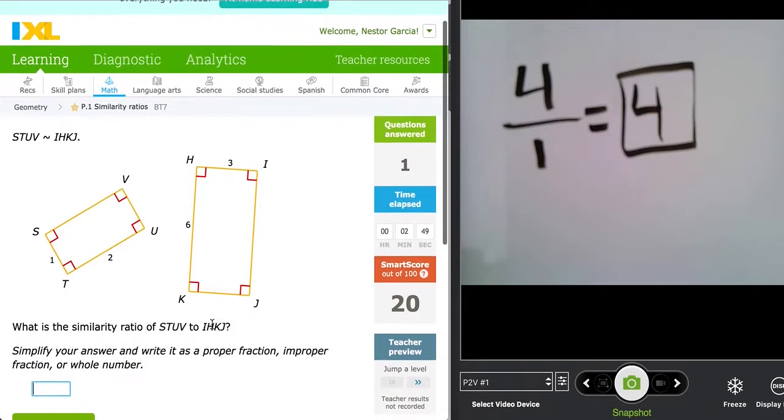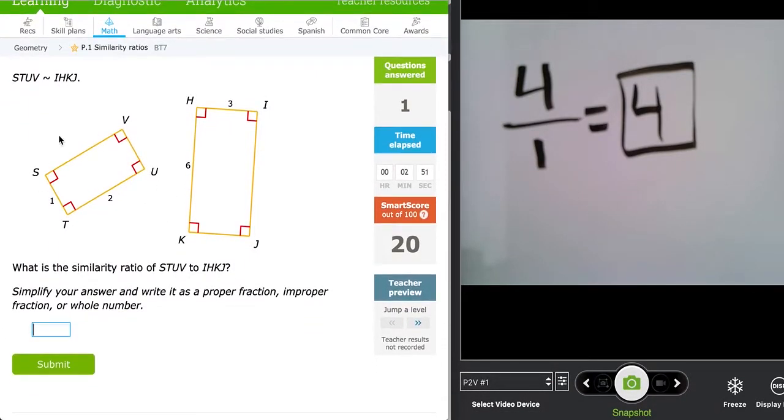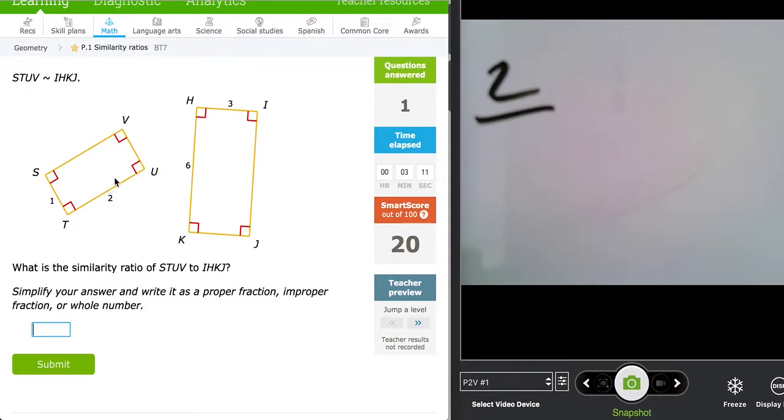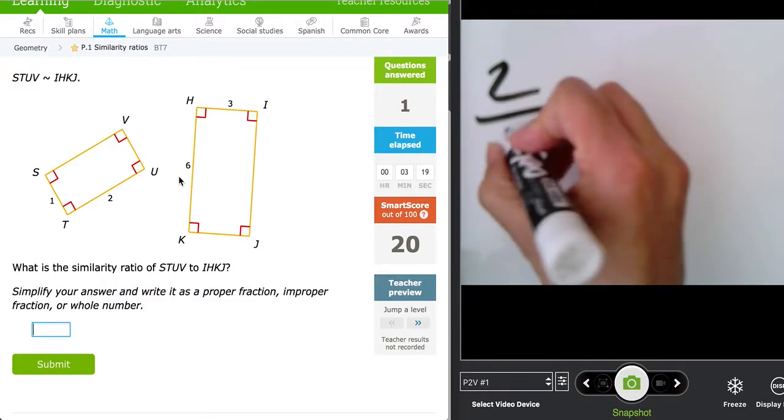Now let's go ahead and go on to the shape here. Here we have STUV is similar to IHKJ. I'm going to take the length of this rectangle down here on the left hand side which that value is 2. So let's go ahead and write that value 2 and we are corresponding that or creating a ratio with its length on the other rectangle here. So here we have the value of 6 as a length.